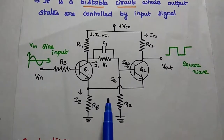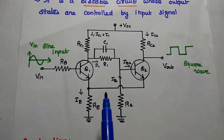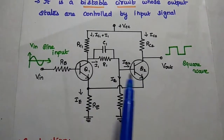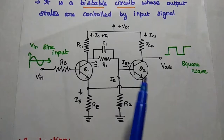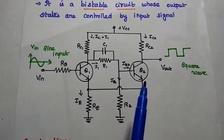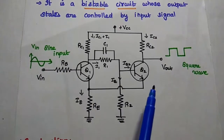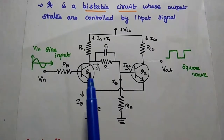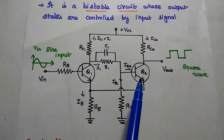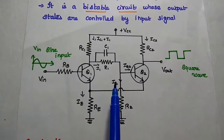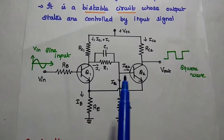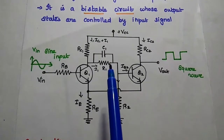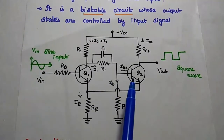This is the circuit diagram of the Schmitt Trigger. In this one, we are using two identical transistors Q1 and Q2. These two transistors are connected regeneratively — that means the collector of Q1 is coupled to the base of Q2, which creates a regenerative feedback path. This is the resistive coupling between Q1 and Q2.